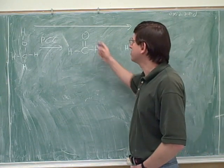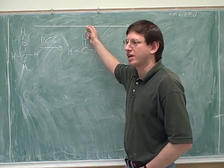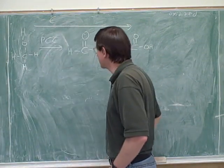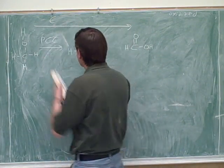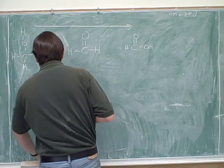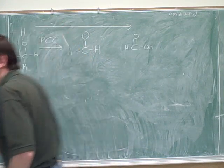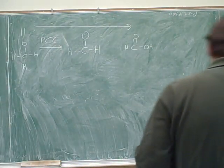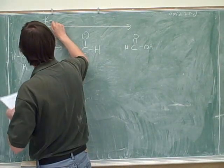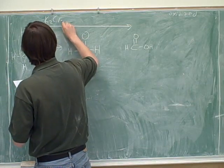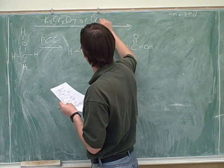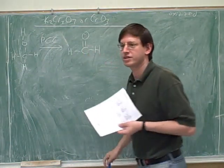And where do they get the new O from? Well, this would happen if we used a different chromium reagent. If we had used, say, H2O and... let's see. The ones that are commonly used are, say, chromium trioxide or K2Cr2O7. Have you guys seen this?